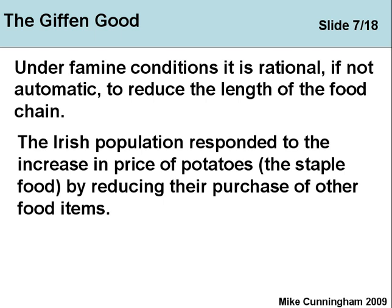The Irish population responded to the increase in the price of potatoes, which was affected by blight. Potatoes were their staple food — it's what they ate. They were a very poor population and they had no choice. So they responded to the failure of the potato crop by reducing their purchase of other items, trying to release income from other purchases so they could spend it on potatoes.